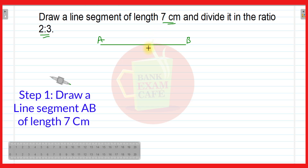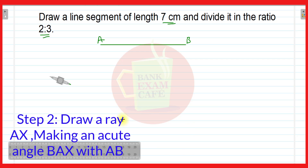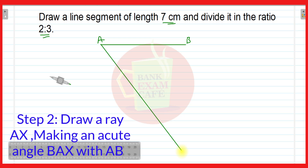Then we have to draw a ray AX such that angle BAX will be an acute angle. So with the help of a scale, you have to draw ray AX. This is ray AX, and this point is X. And this will be the angle BAX — you have to draw ray AX such that angle BAX will be an acute angle.